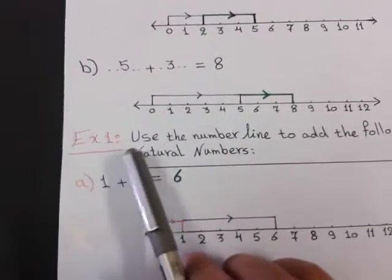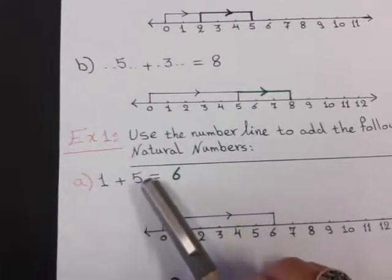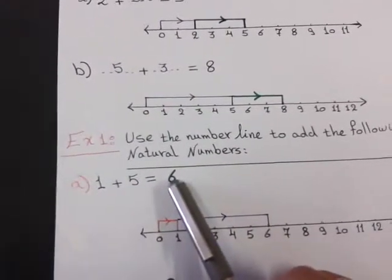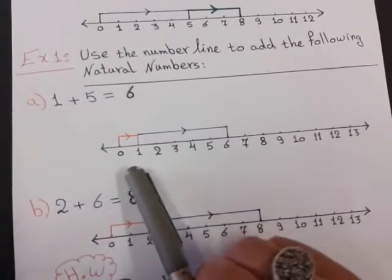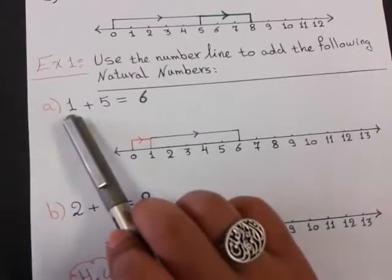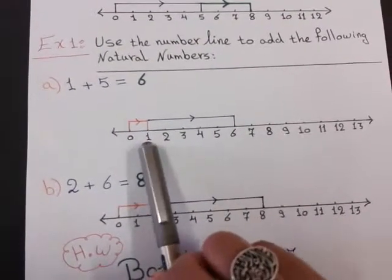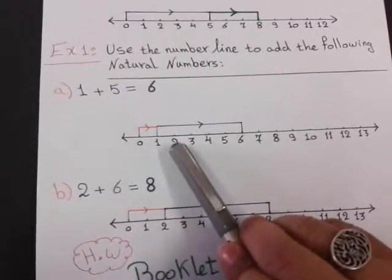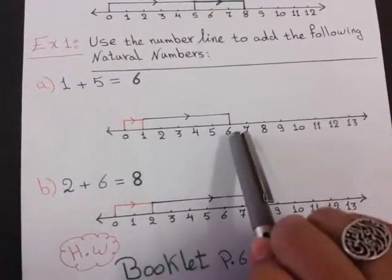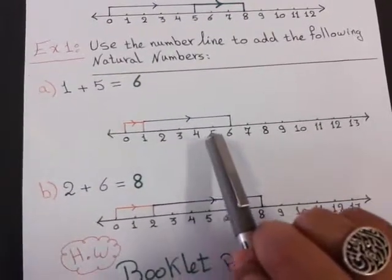Example number one: use the number line to add the following natural numbers — one plus five. We all know that one plus five equals six, but I want to represent this operation on the number line. I will draw a number line, then move to the first number: start at zero and move one step to reach number one. Then I count five steps after one: one, two, three, four, five — so I reach number six. One plus five equals six.